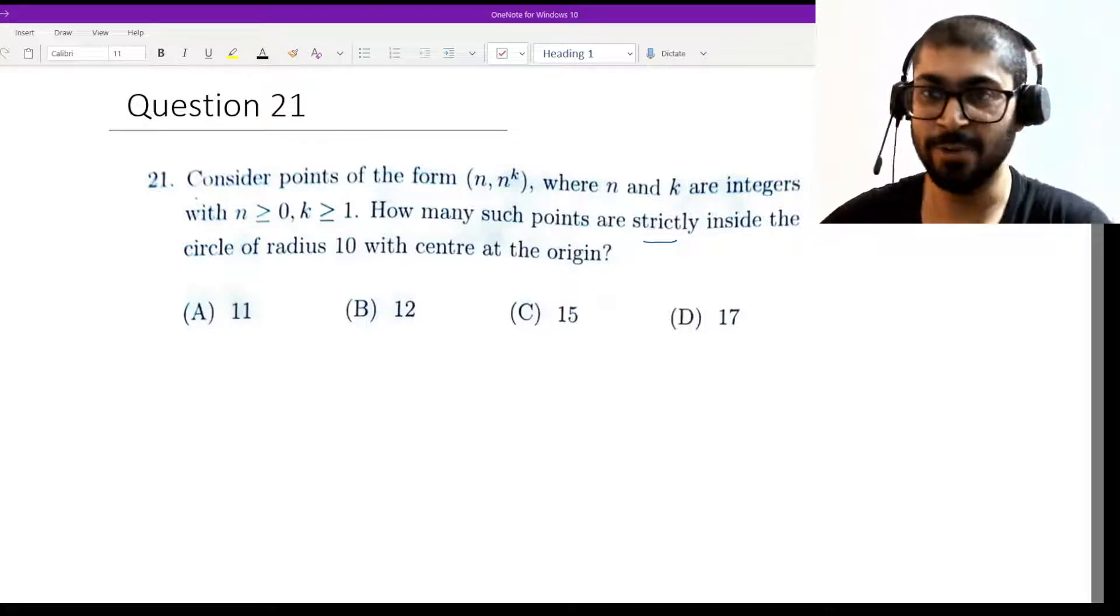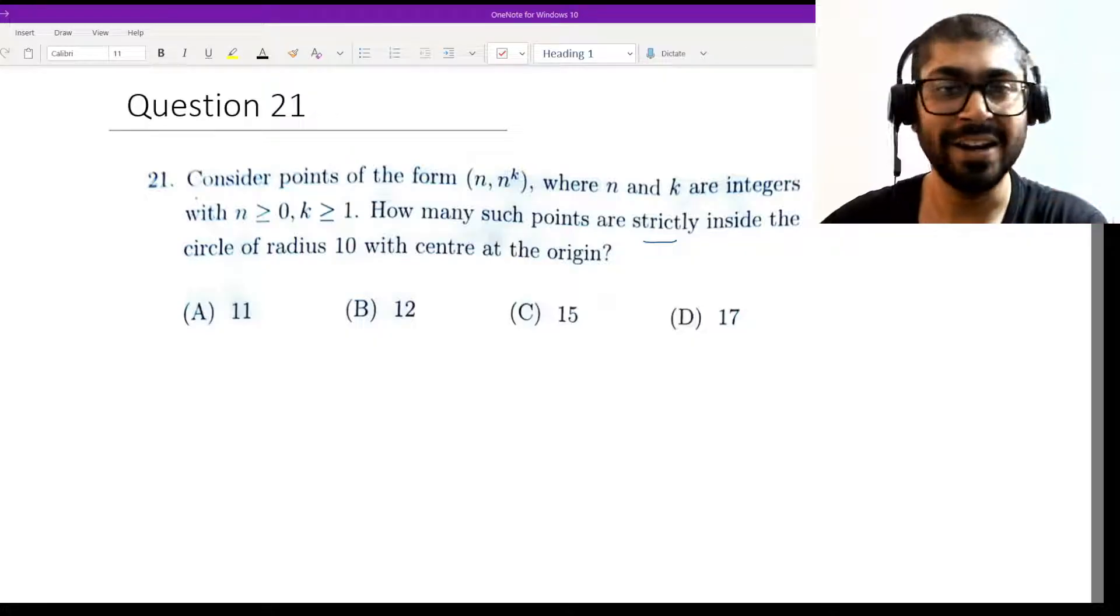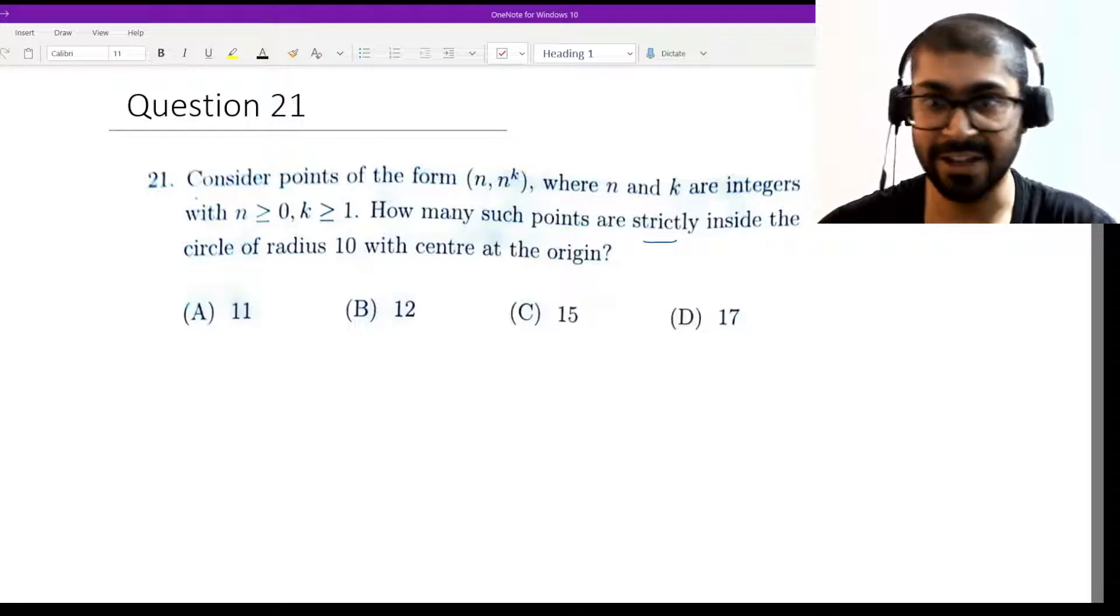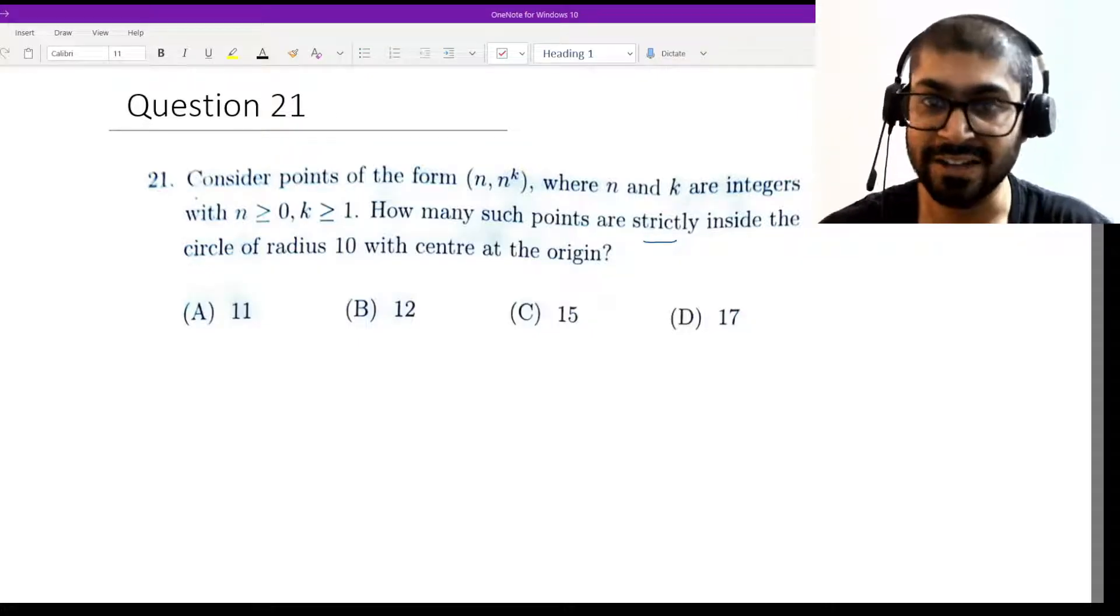The first question is question 21 that we are going to tackle here. It says consider the points (n, n^k) where n and k are integers and n is greater than 0, and k is greater than or equal to 1. How many such points are strictly inside the circle of radius 10 with center at origin?